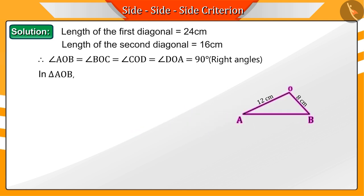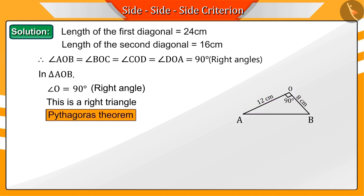In triangle AOB, we see that angle O is 90 degrees. Hence, this is a right-angled triangle. Therefore, using the Pythagorean theorem, the length of side AB is found to be 14.42 cm.